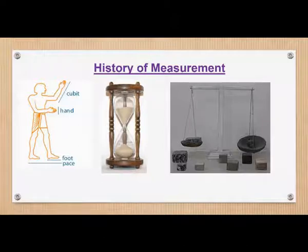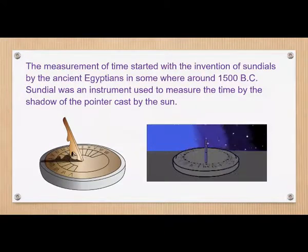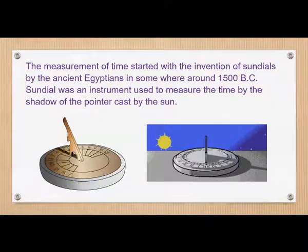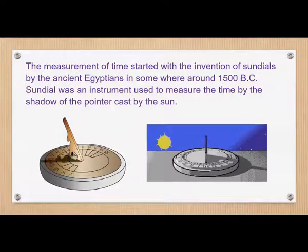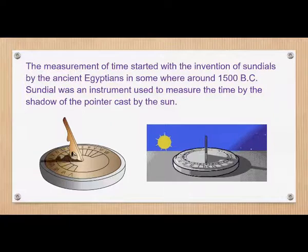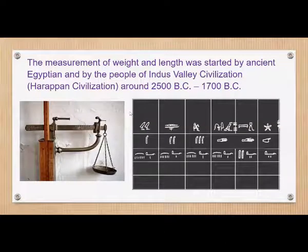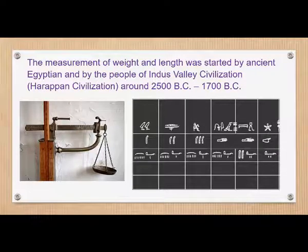In the past, the idea of a modern universal measuring system did not exist. The measurement of time started with the invention of sundials by the ancient Egyptians around 1500 BC. A sundial was an instrument used to measure time by the shadow of a pointer caused by the sun. The measurement of weight and length was started by ancient Egyptians and the people of the Indus Valley civilization, also known as Harappan civilization, around 2500 BC to 1700 BC.